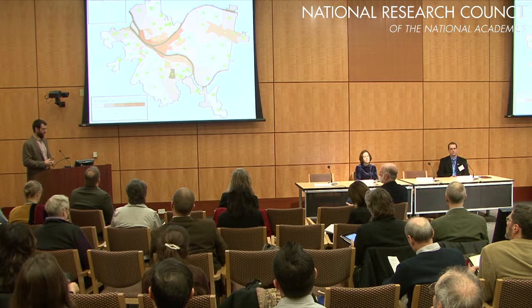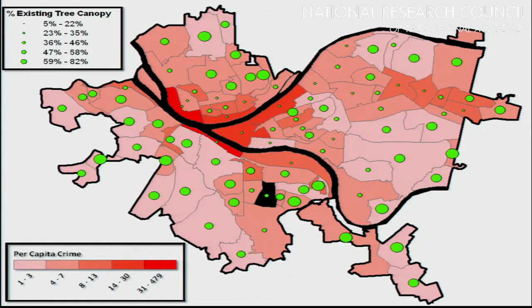Here we have an example from Pittsburgh. They've got some great crime data at the neighborhood level we were able to get. Here we have per capita crime, and the size of those circles represents percent tree canopy. We've done work in Baltimore that shows when you control for everything, tree canopy and crime are very closely associated with one another. These maps tend to be very, very powerful — they help highlight sometimes things people knew already, but now they have incontrovertible evidence of areas which are low in tree canopy and how that may associate with other important things in their community.